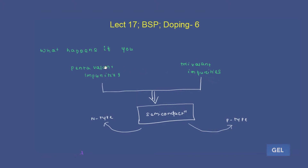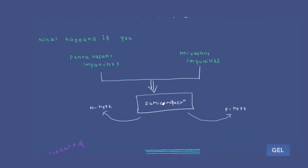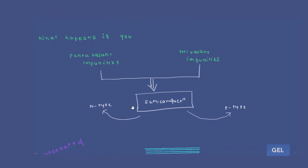Now, what if we add both pentavalent impurities and trivalent impurities to a semiconductor? If you add both pentavalent and trivalent impurities together to a semiconductor, it will give mixed behavior — it will give both n-type behavior as well as p-type behavior.